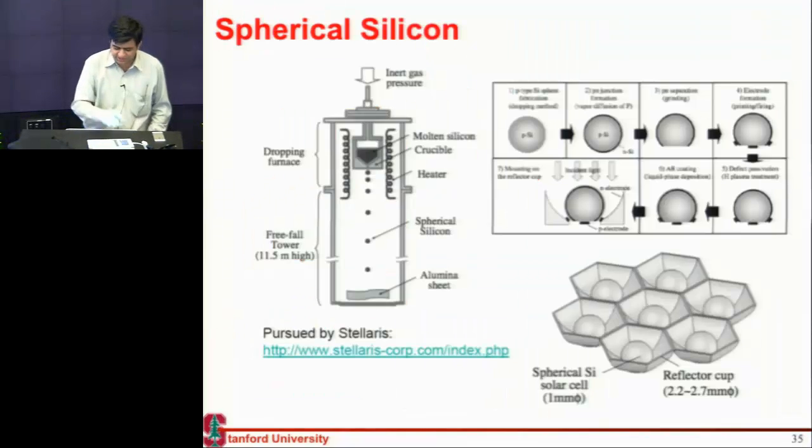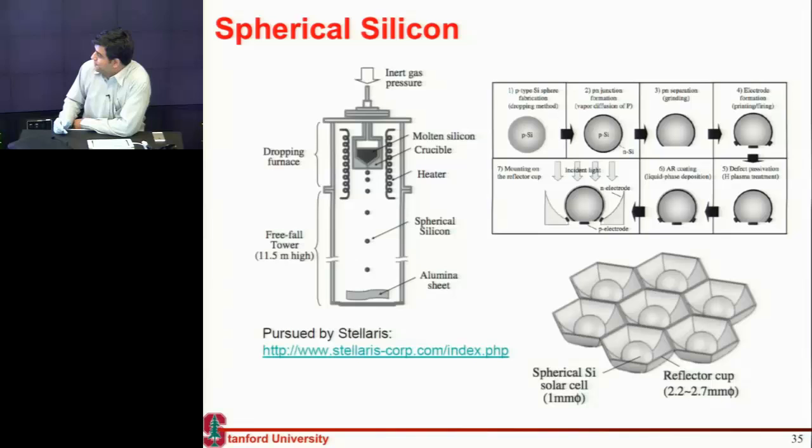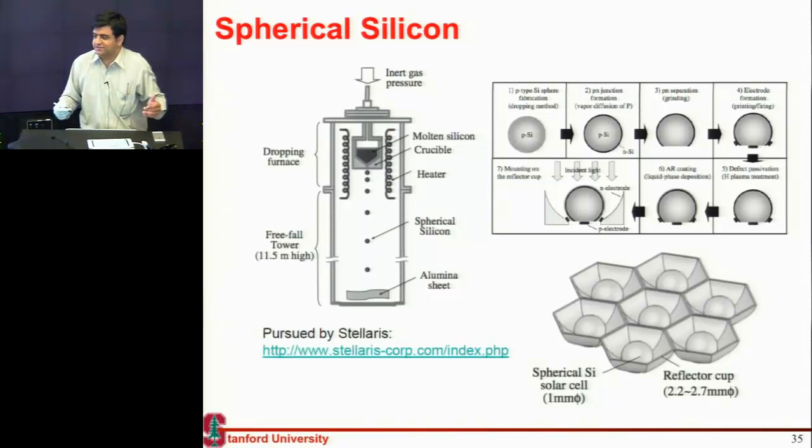Now here's an even more radical approach. So the cost involved, one of the largest costs and one of the largest energy consumption is involved in making the wafers. Making these silicon wafers. So we melt our crucibles, we form these molten silicon, we pull out that crystal, and then you chop it off into these thin wafers.